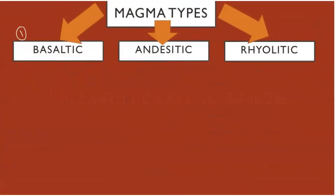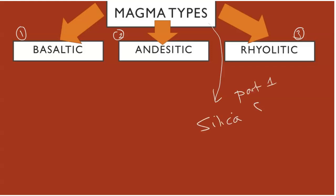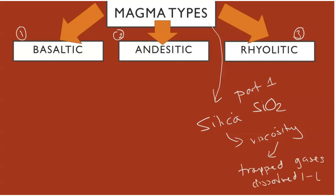The three main types of magma listed are basaltic, andesitic, and rhyolitic. Linking on from part one, the main component is silica — SiO2 — which controls the viscosity of the magma, the amount of resistance to flow the liquid will have. This also increases or decreases the amount of trapped dissolved gases, between one and six percent, which are kept within the magma and are deemed the volatiles.